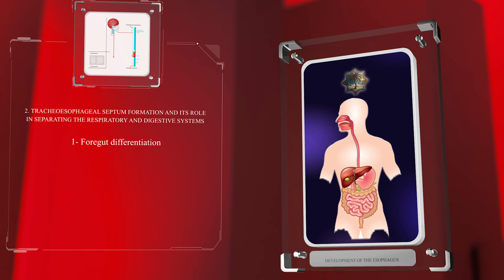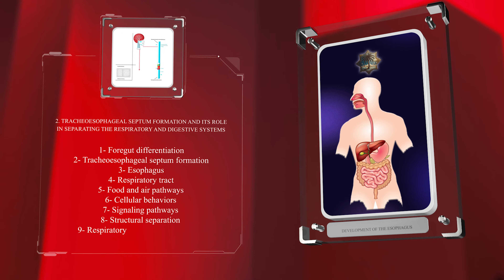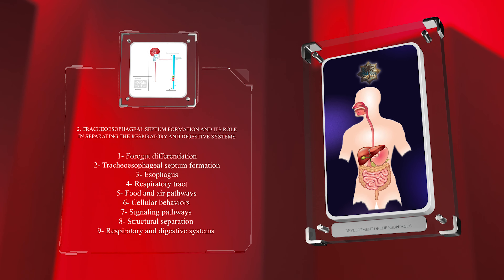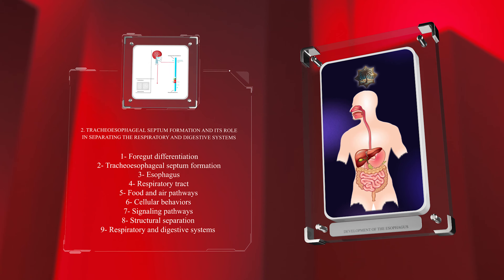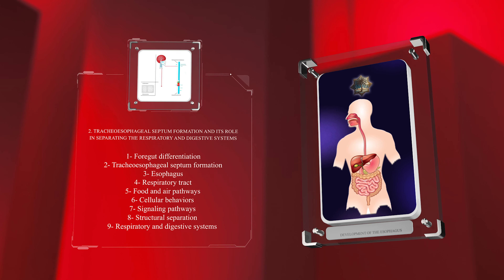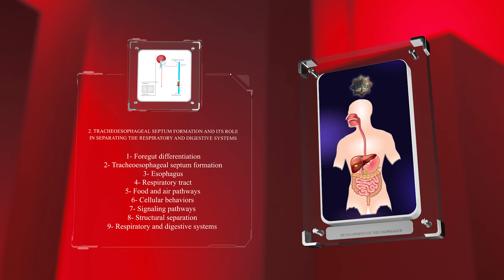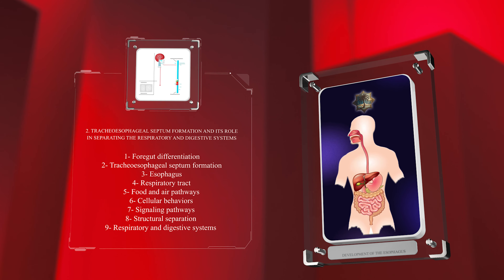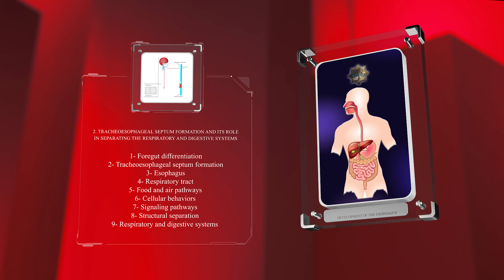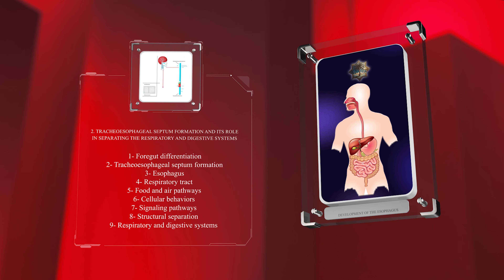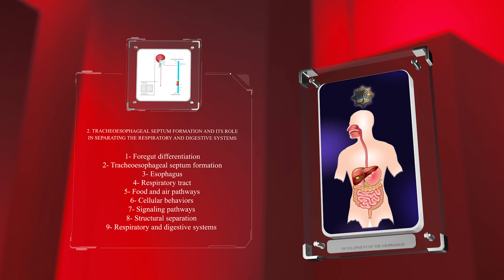As the foregut undergoes differentiation, a crucial process known as tracheoesophageal septum formation occurs. This process is responsible for separating the developing esophagus from the respiratory tract, ensuring that food and air travel through separate pathways. The intricate cellular behaviors and signaling pathways involved in septum formation play a vital role in establishing this structural separation between the respiratory and digestive systems.